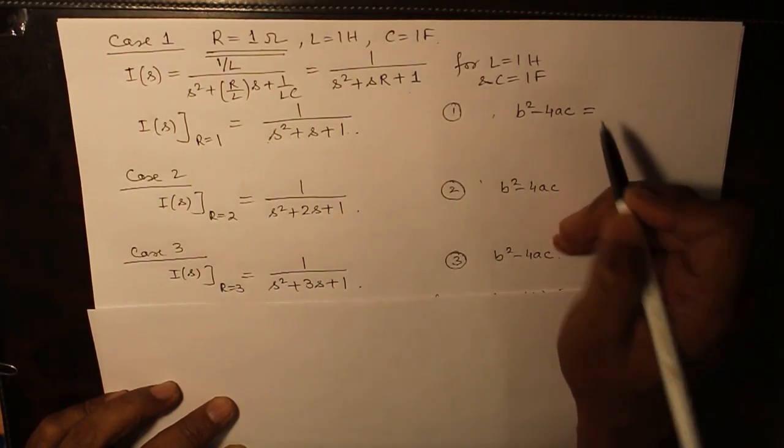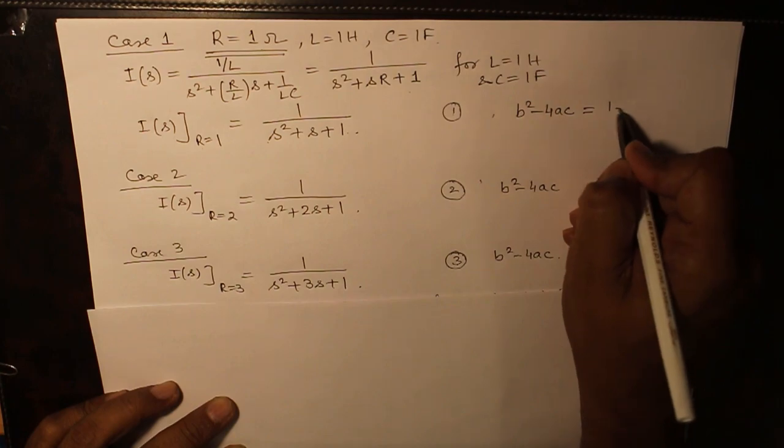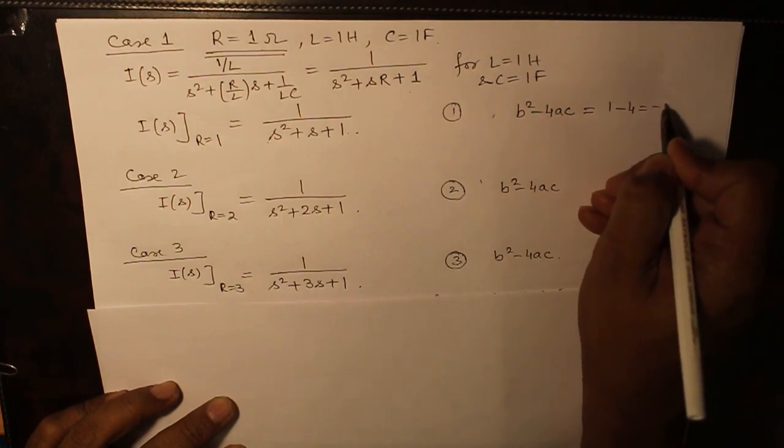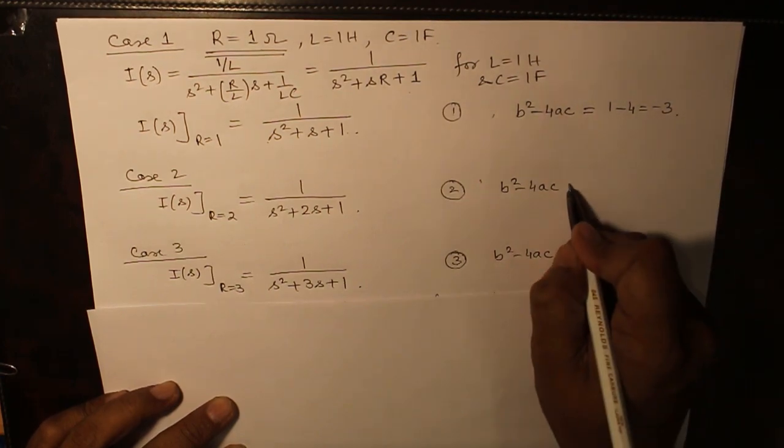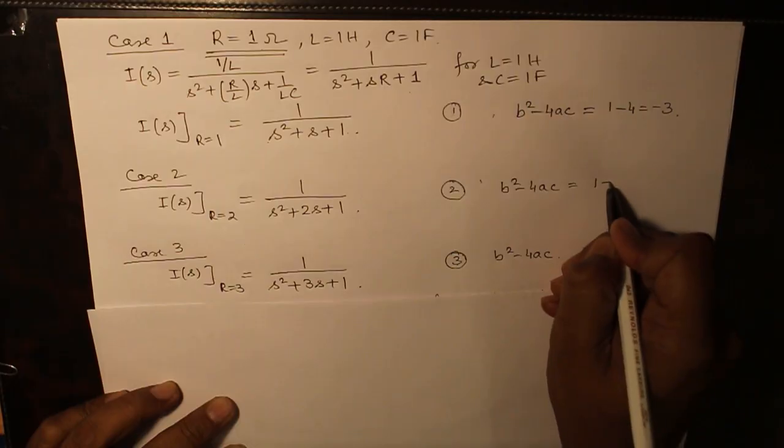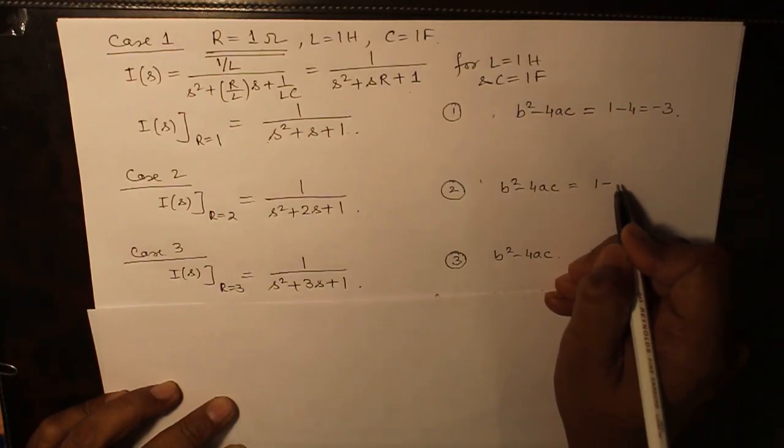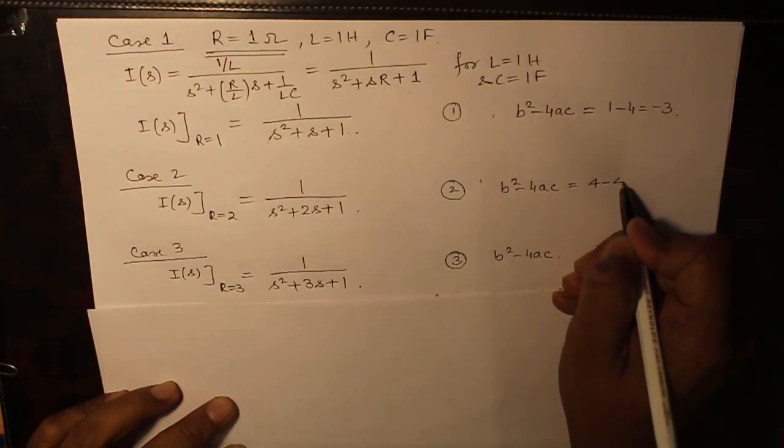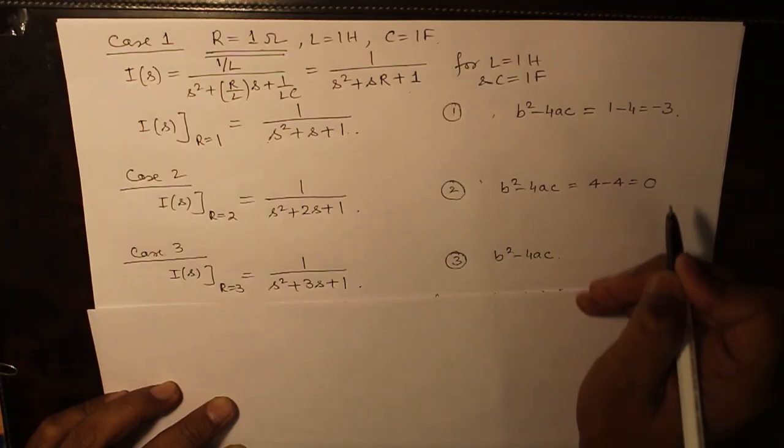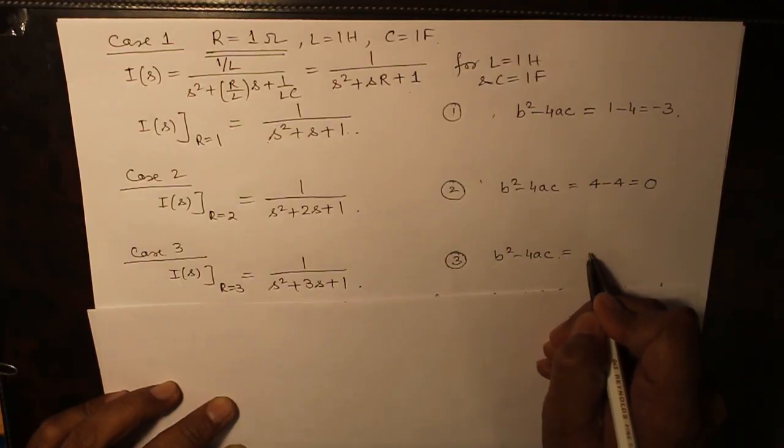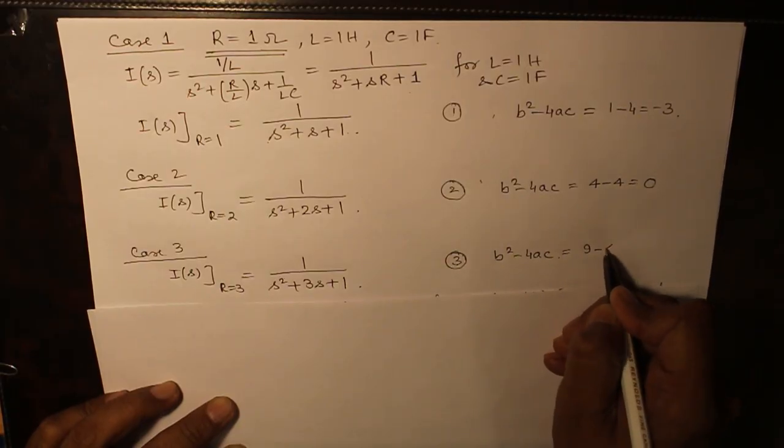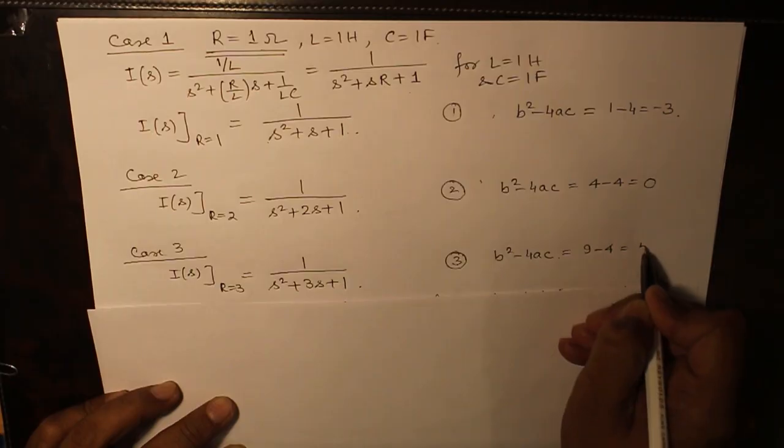This becomes 1 minus 4, that is minus 3. This becomes 1 minus 4, that is equal to 0. And this gives you 9 minus 4, which is equal to 5.